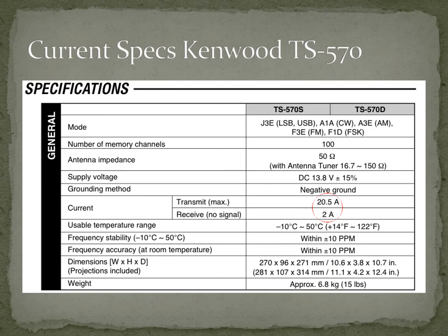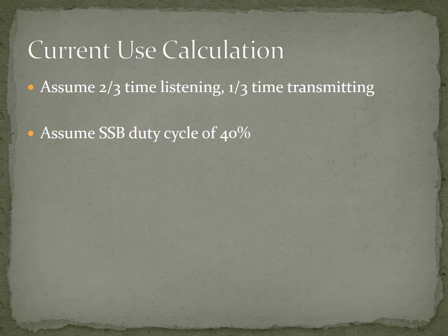The radio that I use for my go kit is a typical HF radio — it's a Kenwood TS-570, all-band, all-mode radio. Looking at its specifications, in transmit it uses 20.5 amps, and in receive, without receiving a signal, it uses two amps of energy. So how are we going to calculate our energy requirements?